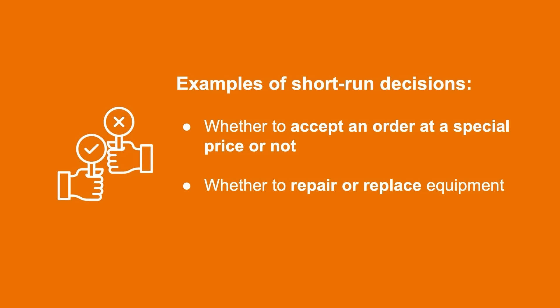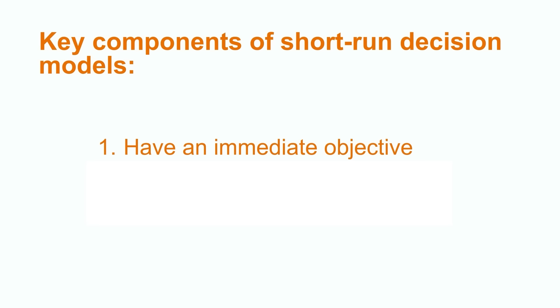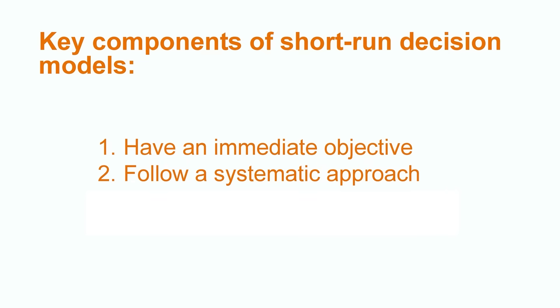Another type of short-run decision that manufacturing companies are faced with is whether to make or buy. Instead of producing their products from scratch, the company might be able to save money by purchasing certain components in finished form from another supplier. While these are just a few examples, there's generally an immediate objective to these decisions, such as attempting to lower operating costs or increase profitability. In order for companies to make good short-run decisions, it's best that they follow a systematic approach using some kind of decision model.